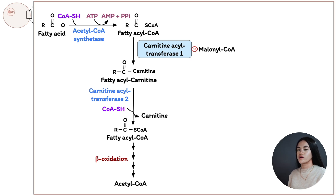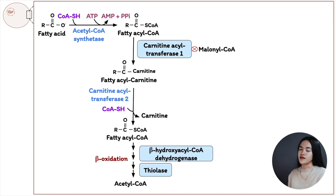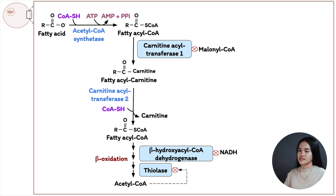Two beta-oxidation enzymes are also allosterically regulated. First, beta-hydroxyacyl-CoA dehydrogenase is inhibited when the NADH/NAD+ ratio is high, signaling the cell has sufficient energy. Second, thiolase is inhibited by high concentrations of acetyl-CoA. Those are the inhibitors of fatty acid oxidation.